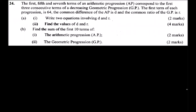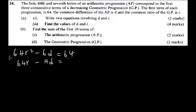In part b, we need to find the values of d and r. Using our two simultaneous equations — 64r² minus 6d equals 64, and 64r minus 4d equals 64 — we solve by eliminating d. We multiply the first equation by 2 and the second equation by 3, making both d coefficients equal to 12.